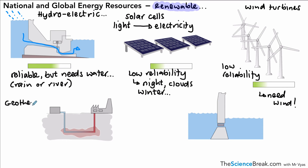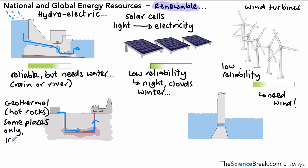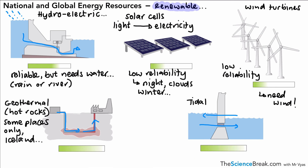Geothermal energy relies on hot rocks below the surface. Water is pumped down to the hot rocks, turns to steam, and that steam turns turbines to generate electricity. It's only available in certain places around the world — Iceland is a common example due to the presence of hot rocks below the surface. Where it is found, the reliability is very high. Tidal energy uses the flow of tides through a tunnel in a structure to generate electricity both as the tide comes in and goes out. Its reliability is high because tides occur day in day out, though the structure must be built near the ocean.